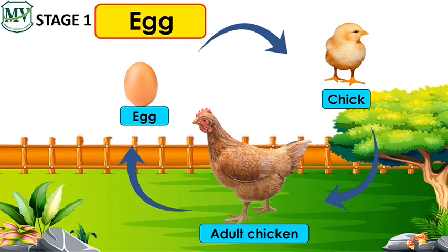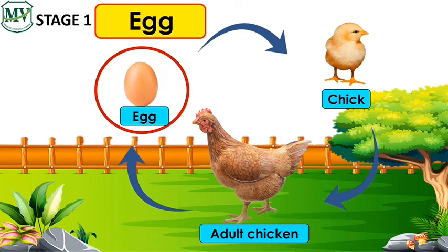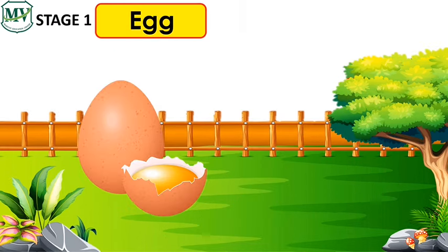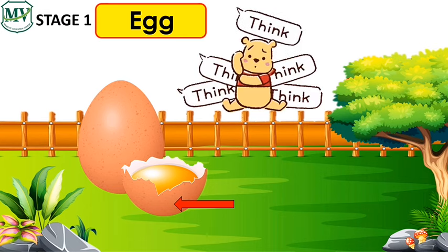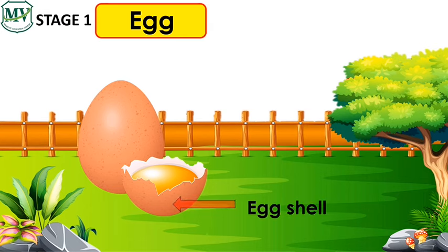The life cycle of a chicken starts from an egg. Egg. What do you call the outer layer of the egg? It is the eggshell. The eggshell protects the developing chick.